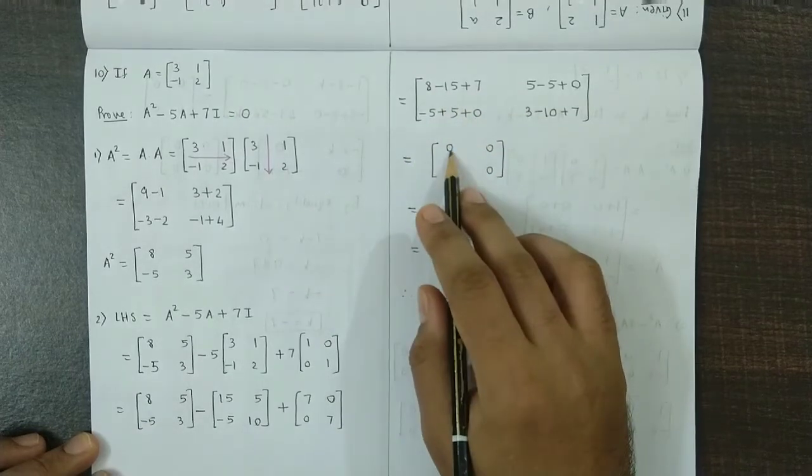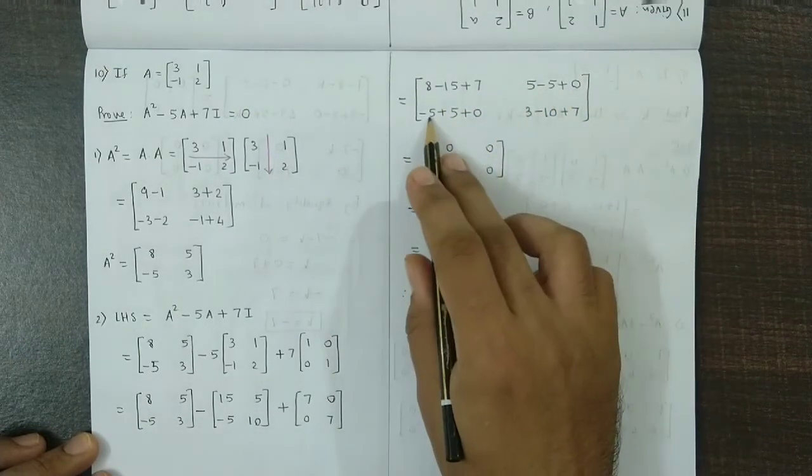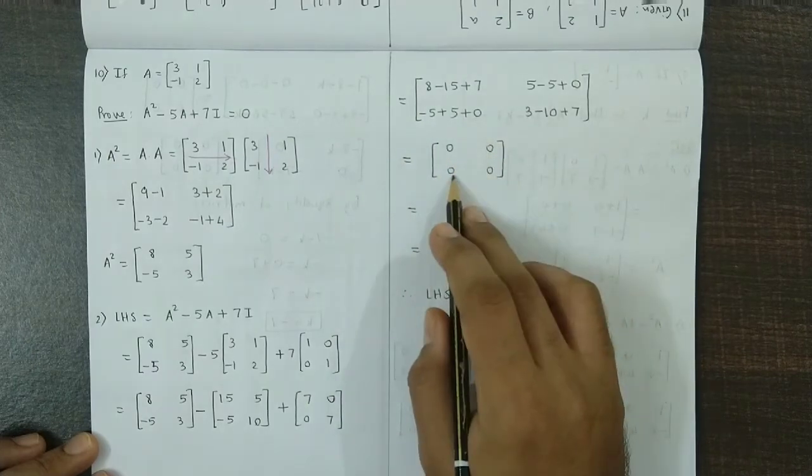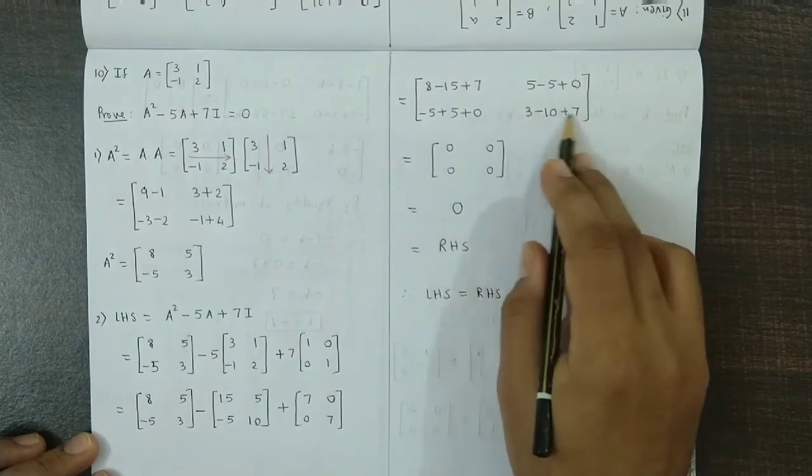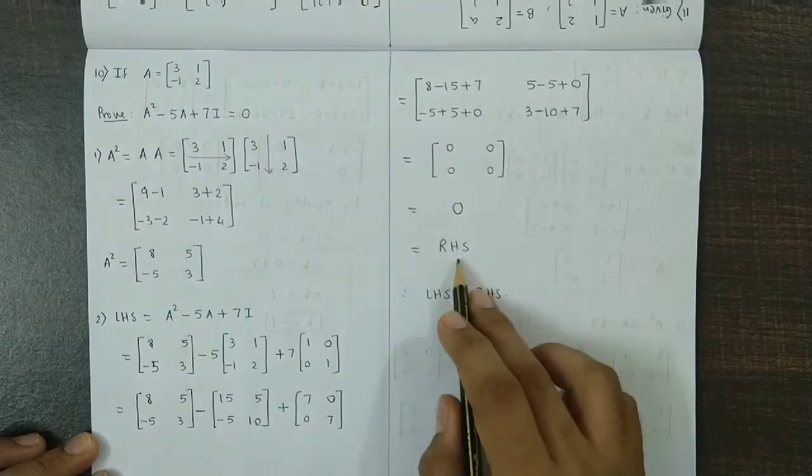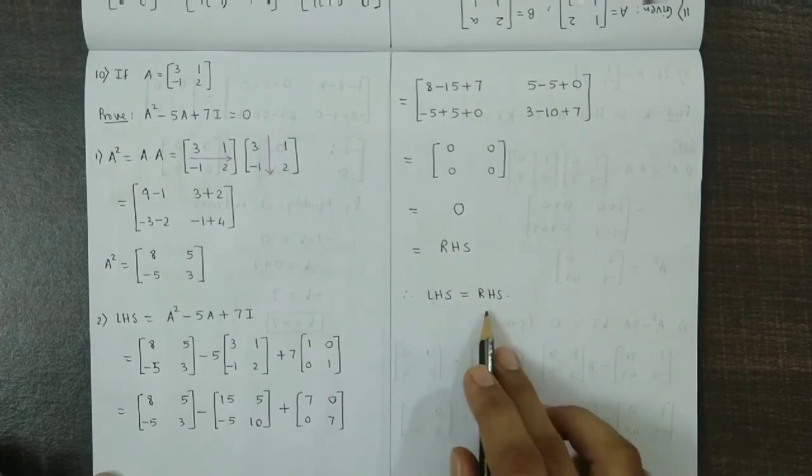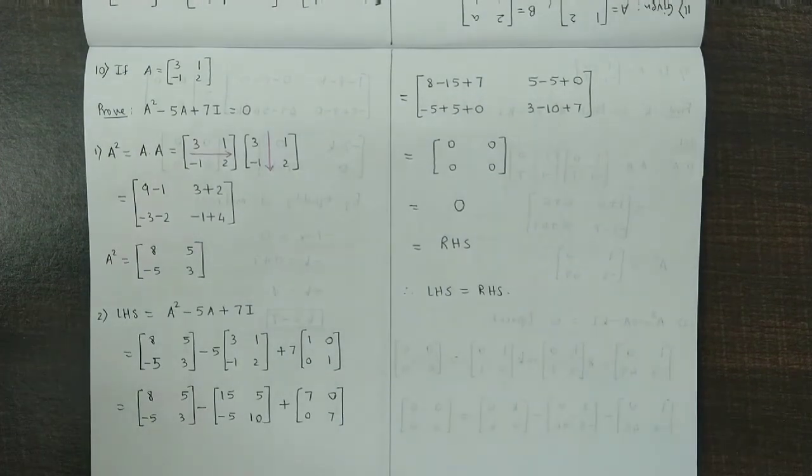Now this is 15 minus 15, that is 0. 5 minus 5 plus 0, that will be 0. Minus 5 plus 5 plus 0 is 0. This would be 10 minus 10, that is 0. So we have obtained the 0 matrix which is equal to the right hand side. Hence we could say left hand side is equal to the right hand side.